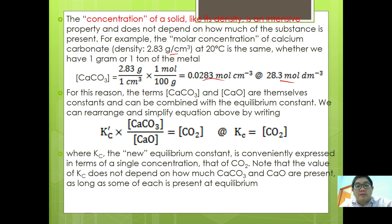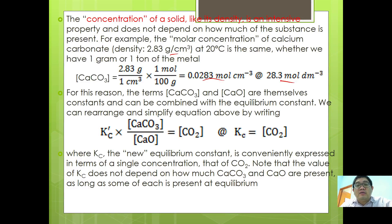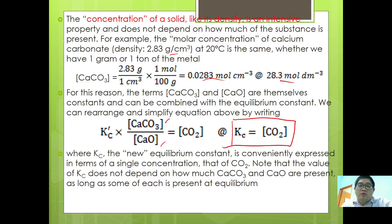For this reason, the concentration of calcium carbonate and calcium oxide are themselves constant. Because the concentration of the solid remains virtually unchanged, these terms can be combined with the equilibrium constant. Rearranging, Kc0 times [CaCO3] over [CaO] gives [CO2]. Therefore, the new Kc is simply [CO2].